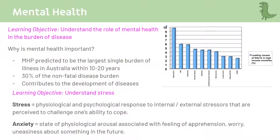The next learning objective is definitions. They want you to understand the difference between stress and anxiety. Stress is usually to do with a stressor — like exams coming up, you're worried because that's a specific stressor. Whereas anxiety is more general: you don't really know what you're anxious about, it's more of a general feeling of being uncomfortable or scared, usually about something in the future that you can't pinpoint.